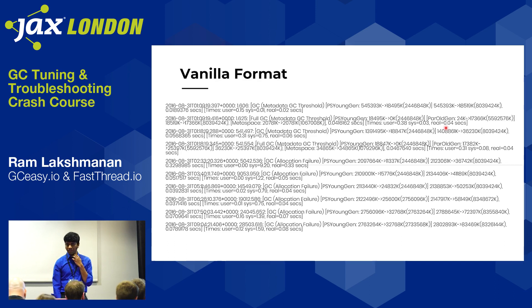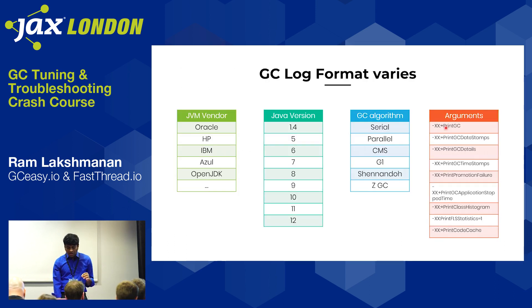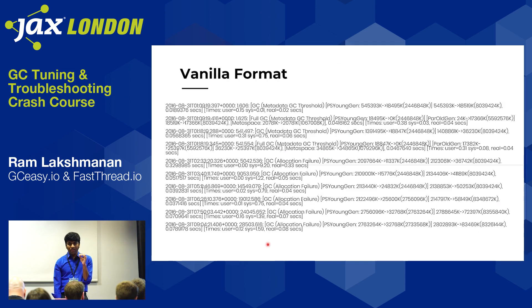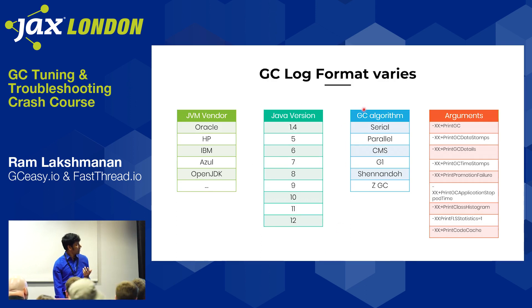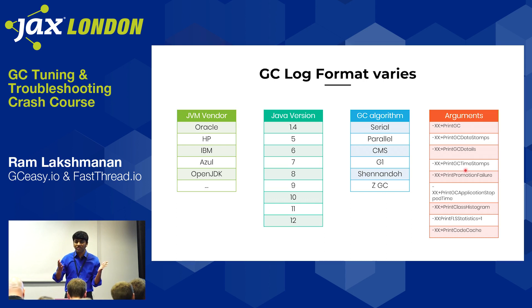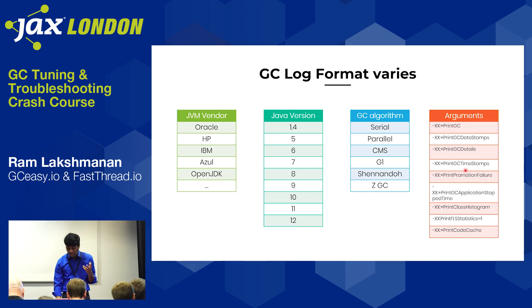Your GC log format also changes based on your vendor — Oracle, HP, IBM, Azure — the Java version you're using, the algorithm, and the arguments you pass. Based on all these factors, you end up with different GC log formats, making the problem even more complicated.